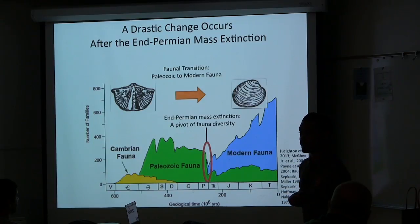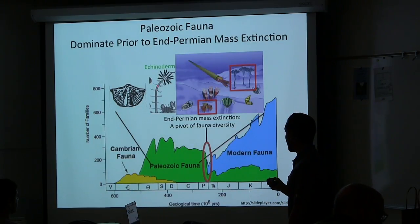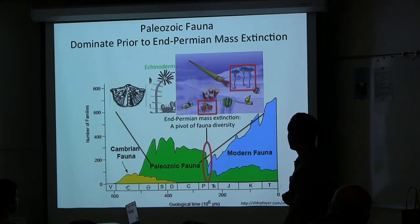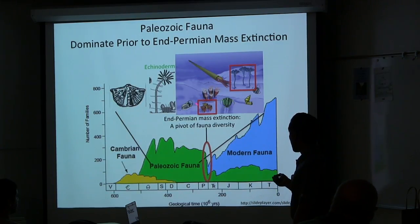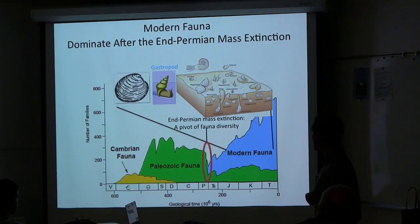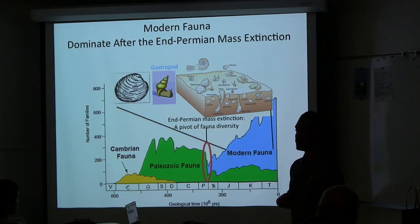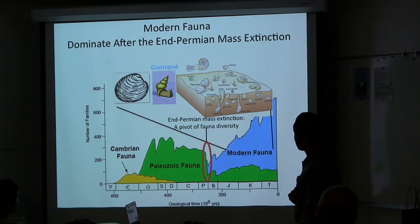The effects of the End-Permian mass extinction have been studied, including the opening of niches for organisms to conquer and understanding how and why the Paleozoic to modern fauna transition happened. Paleozoic fauna representatives like brachiopods and echinoderms lived on the ocean sea floor and were not very mobile. Modern fauna representatives, including bivalves and gastropods, were more active and would bury into the sea floor. Modern fauna became more diverse after the End-Permian mass extinction.